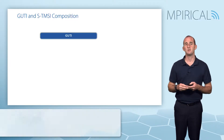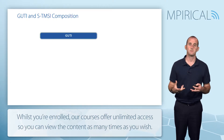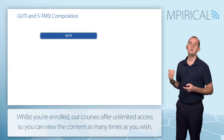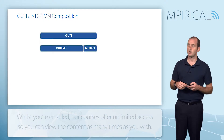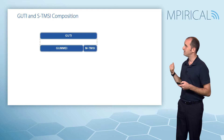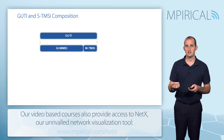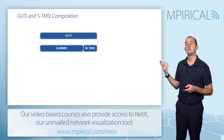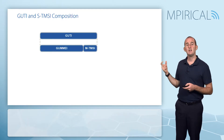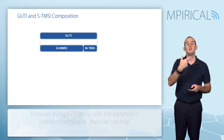The next thing we're going to look at is the breakdown of the GUTI. The GUTI — the Globally Unique Temporary ID — is comprised of a Globally Unique MME ID (GUMMEI) and an M-TMSI. The Globally Unique MME ID is the identity of the MME that has created this GUTI. The M-TMSI is the random string of ones and zeros at the end, created by the MME.